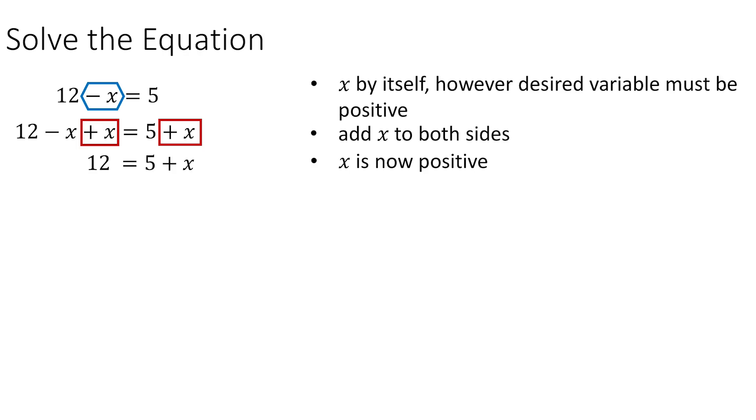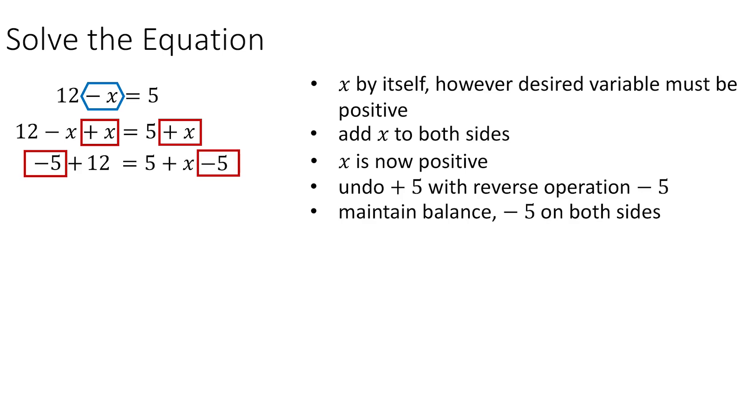Now we have 12 is equal to 5 plus x, and the plus 5 is now what we need to get rid of. So we're going to subtract 5 onto the right-hand side, and then we also have to do it on the left in order to maintain that balance. So now the 5s on the right will cancel out, and you just have to evaluate minus 5 plus 12, which is equal to positive 7, and that's your x.